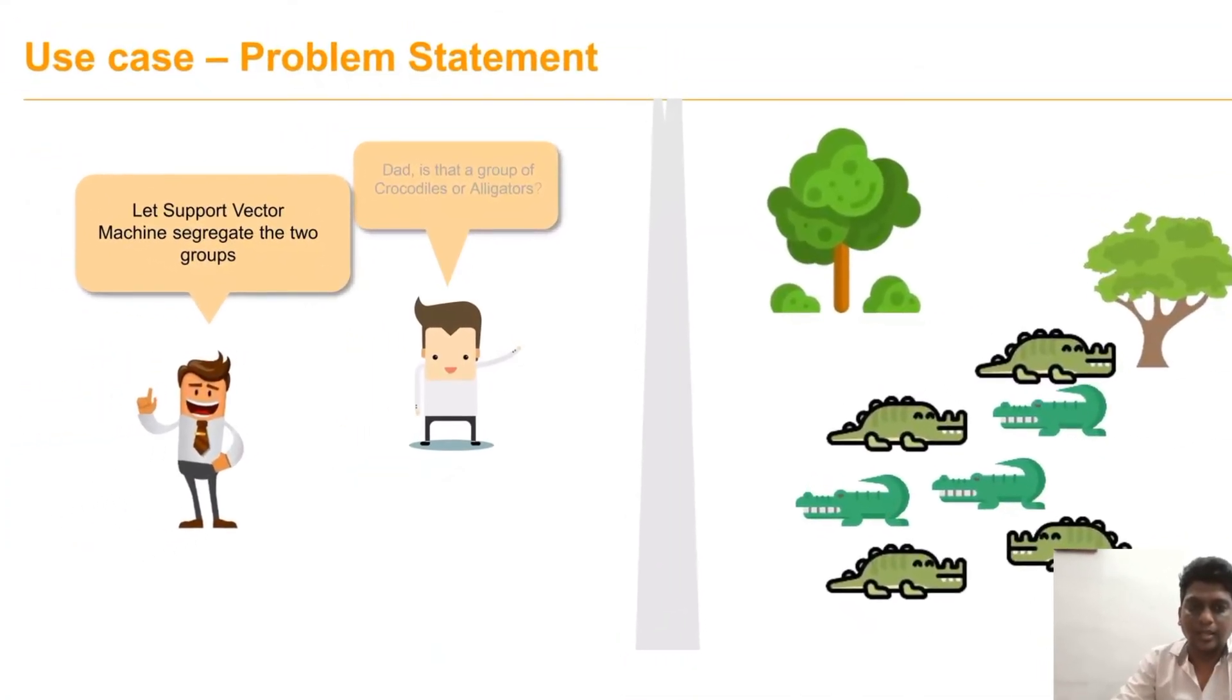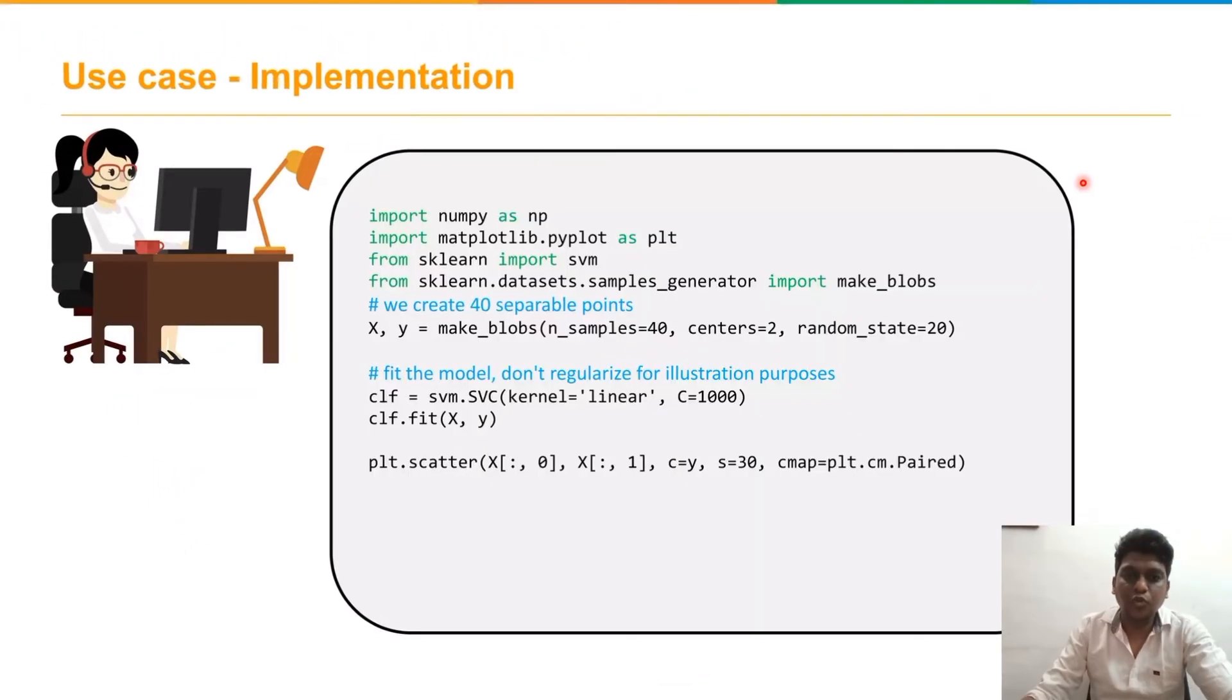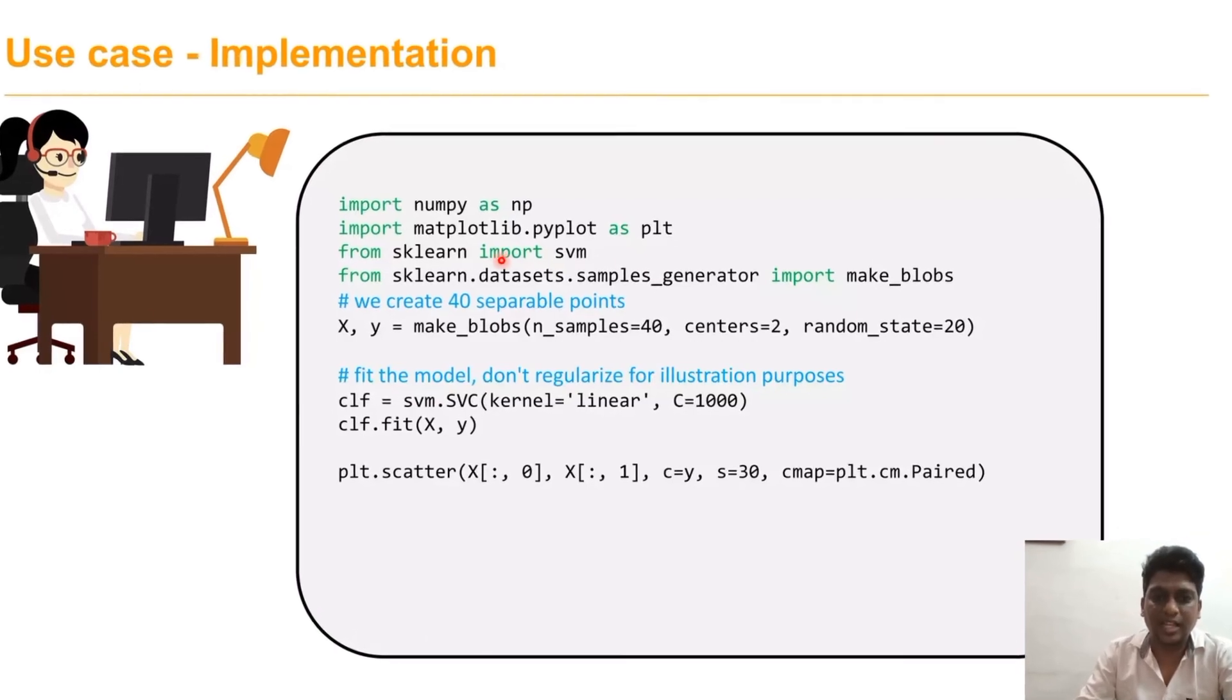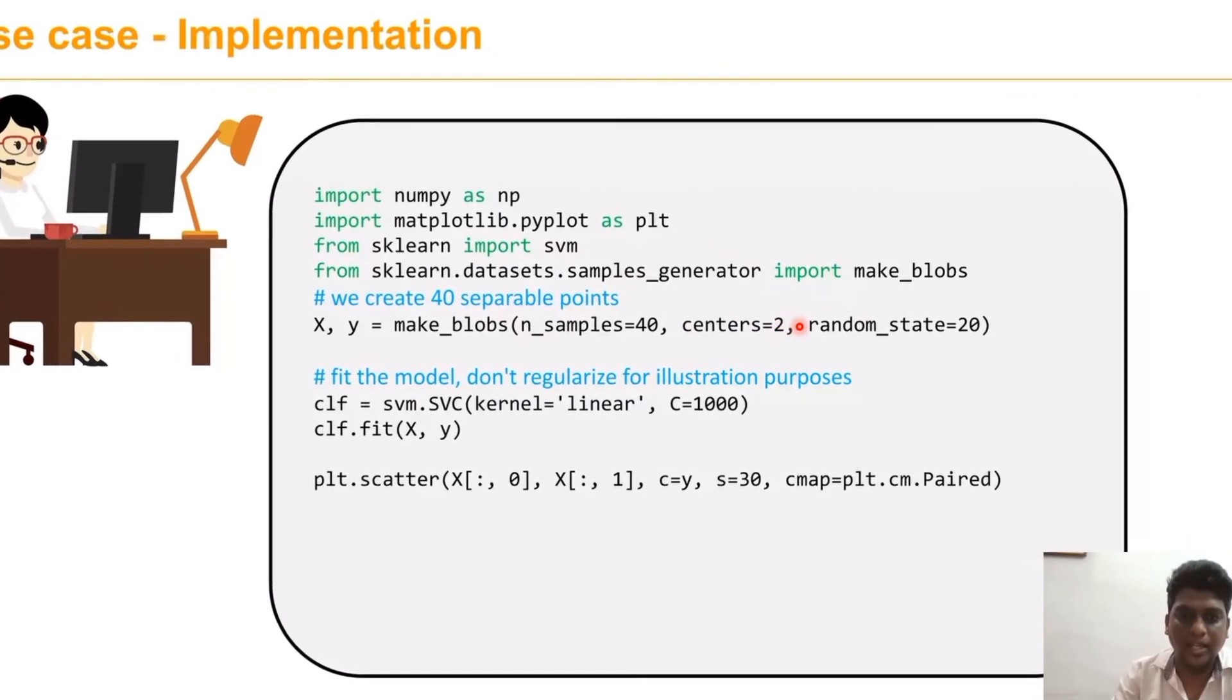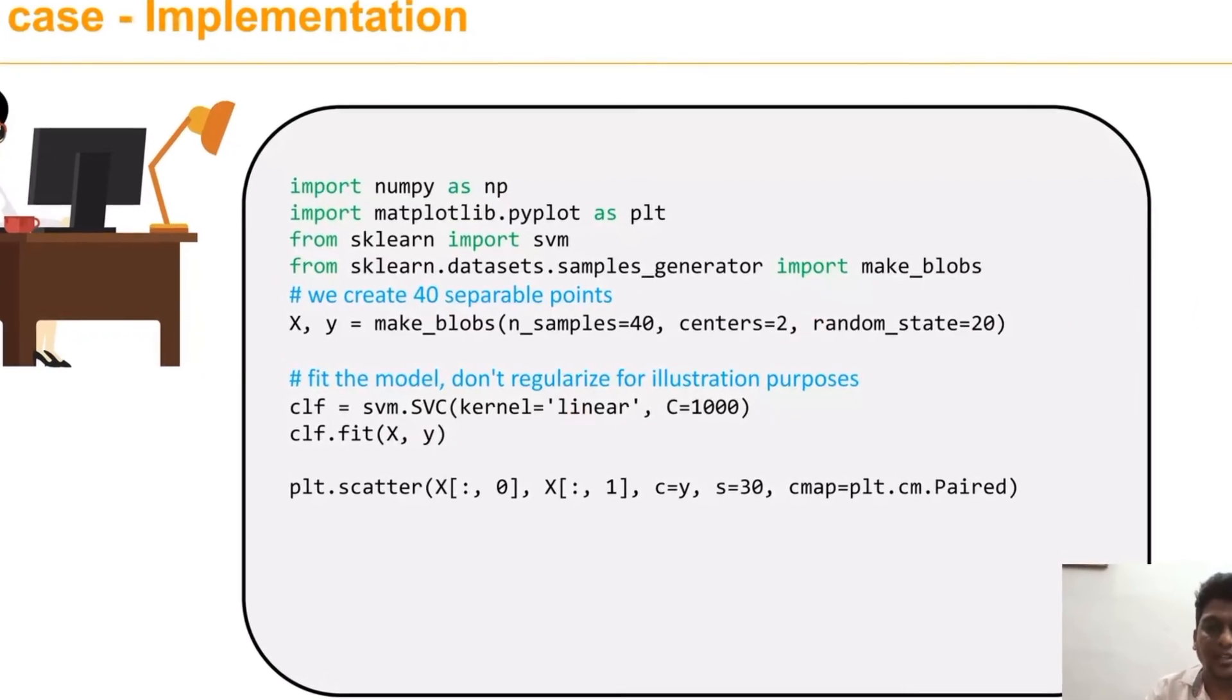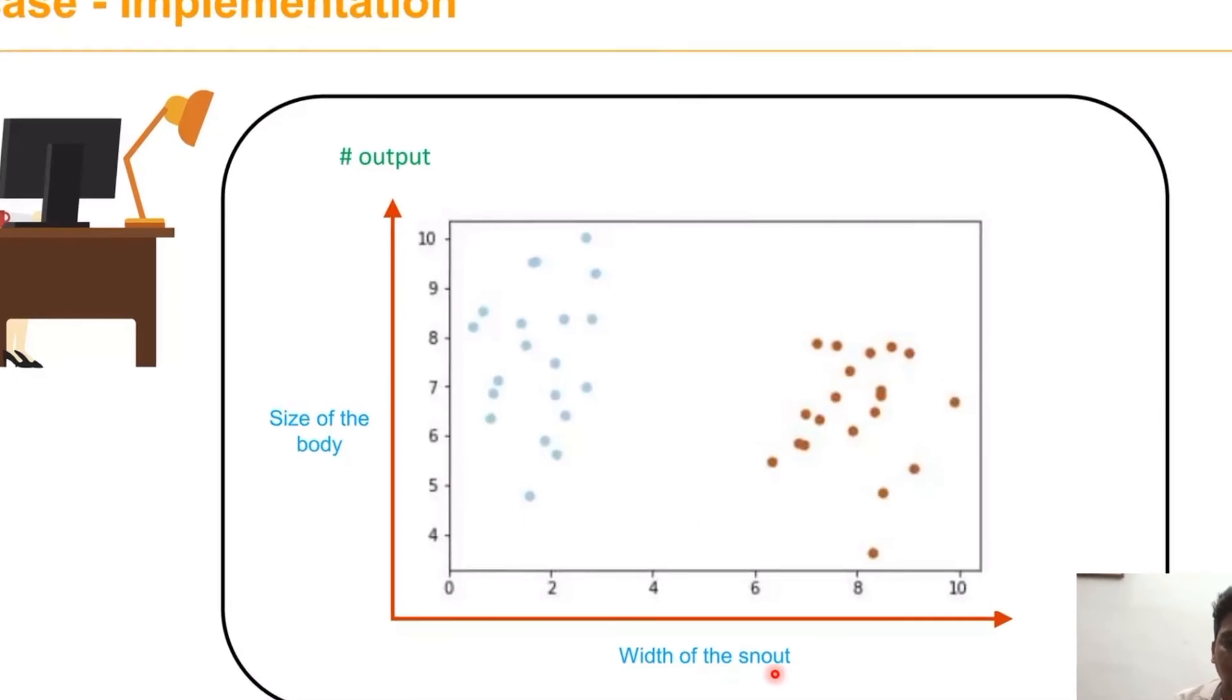Now the SVM segregates them into two groups. We have to implement using Python. Here we have to import the SVM from scikit-learn, then we create 40 separable points, then fit the model.